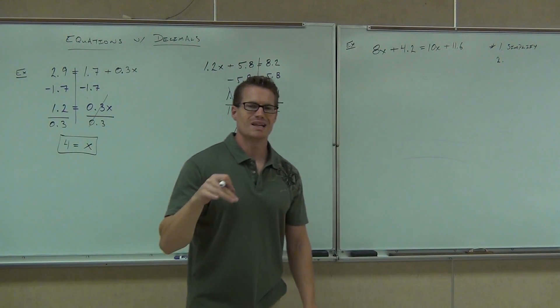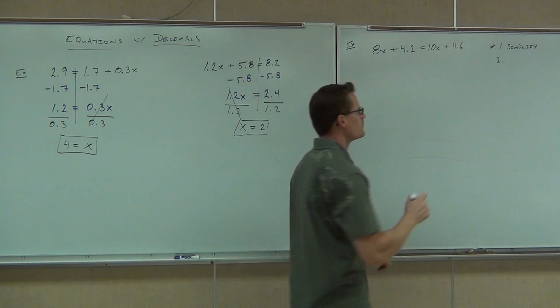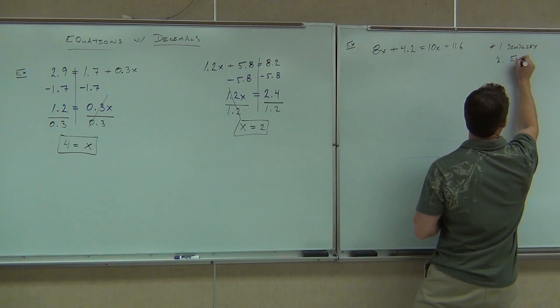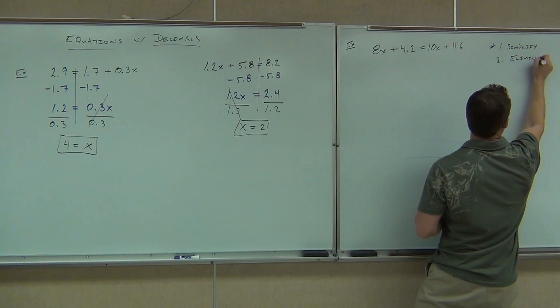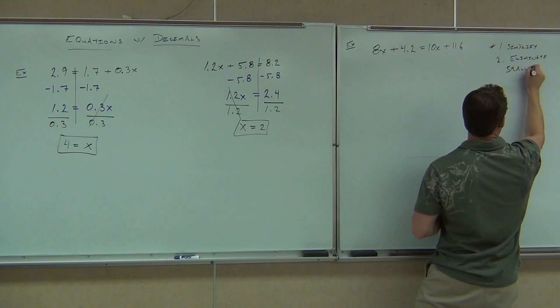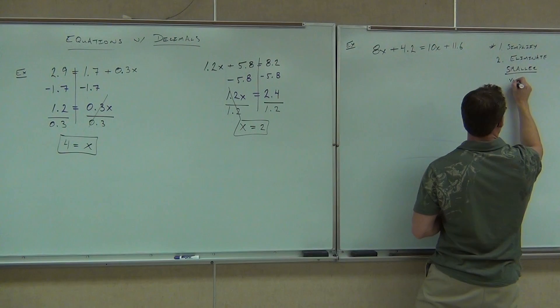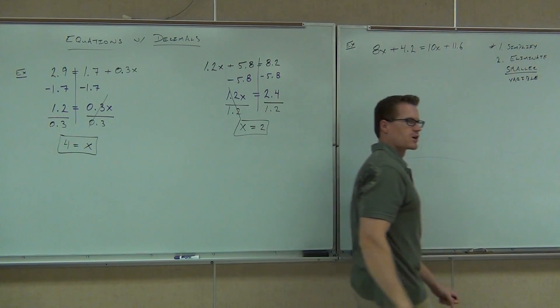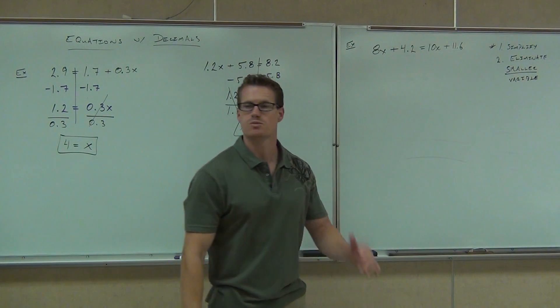Step two, you're going to eliminate your smaller variable. The reason why you choose a smaller one is so that you can keep your variable positive. That's why you want to do the smaller one.